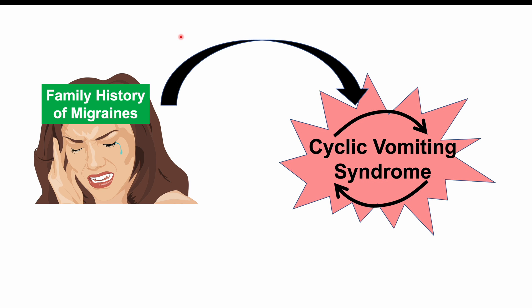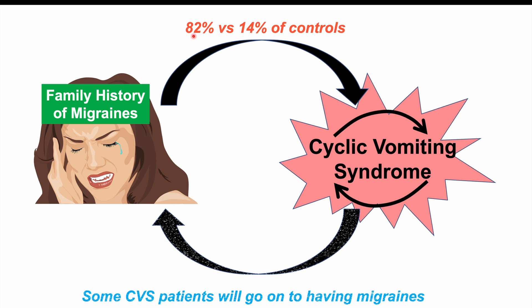There is a strong association between migraine headaches and cyclic vomiting syndrome. If there is a family history of migraine headaches, you're more likely to suffer from CVS. When looking at patients with CVS versus a control group, 82% of CVS patients have a family history of migraines, compared to only 14% of the control group. Patients with CVS may also go on to develop migraine headaches themselves.